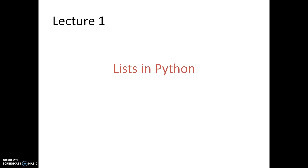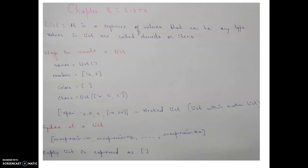Lists in Python — you might have already heard the concept of arrays in your C programming language, where you use that array data structure to save homogeneous data, meaning all elements are of the same type. In lists in Python, it is a similar structure but the key difference is that it is heterogeneous. A list is a sequence of values that can be of any type — integer, string, or even another list.